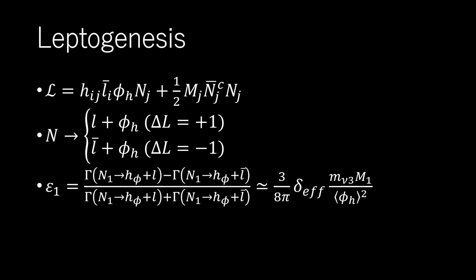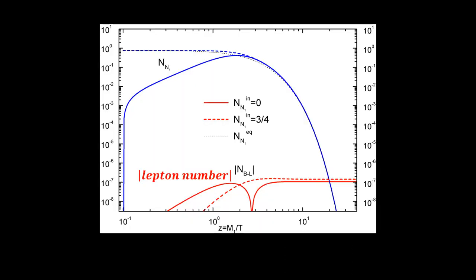If we put appropriate values in these parameters, epsilon 1 would be about 10 to the minus 6th. If epsilon 1 is large to this extent, a sufficient lepton number can be created in the universe as shown in the figure.